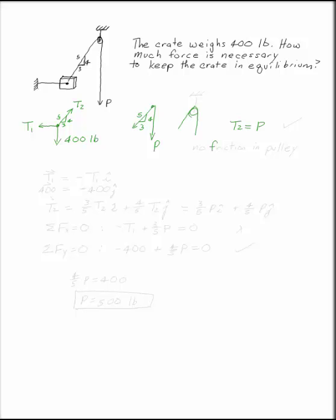That means there's no friction in the pulley—the pulley has to be frictionless and held in place somehow. So as long as there's no friction in the pulley, T2 is equal to P.